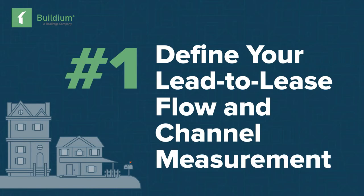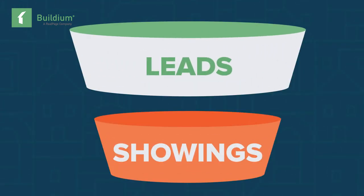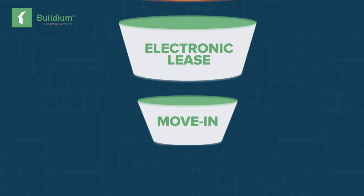Number one: define your lead-to-lease flow and channel measurement. What do we mean when we talk about a lead-to-lease conversion? Think of it like a funnel. We are considering your efficiency down the pipeline, starting with the leads you get, continuing through the showings, and closing with an electronic lease. No matter what, you want to be measuring your conversion rates and understanding the channels that deliver the best leads.